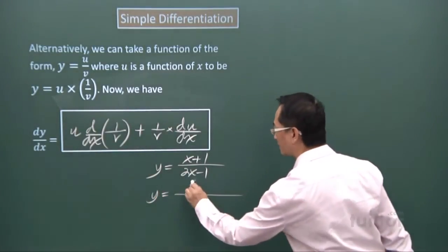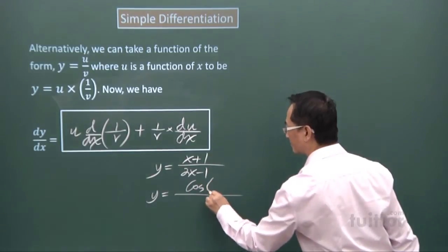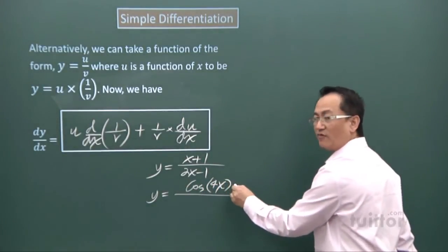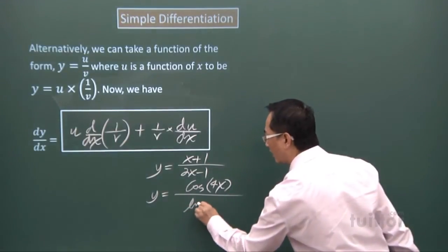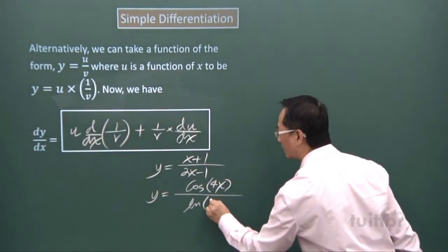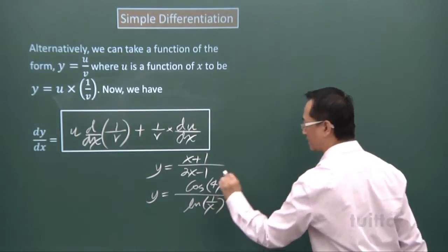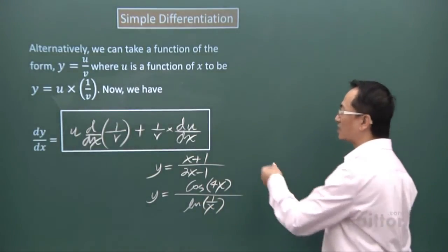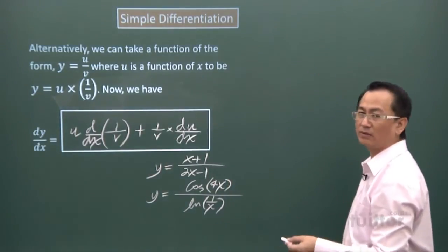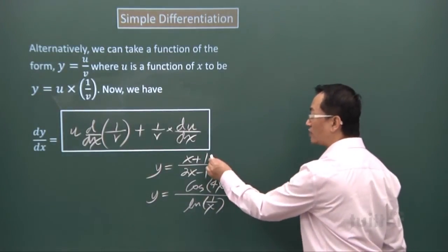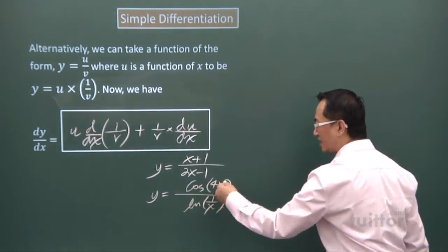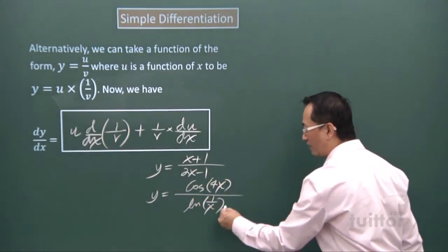Like this: cos bracket 4x divided by long bracket 1 over x. The important thing is with this expression, you must be able to see the u function, the v function, as well as with this here you can see the u function and v function.